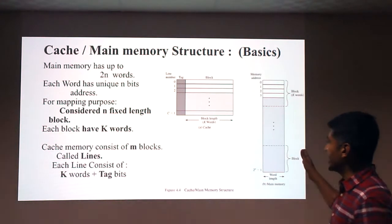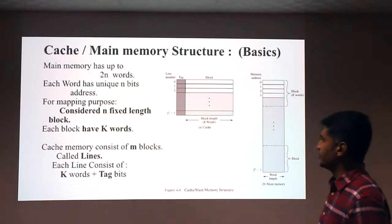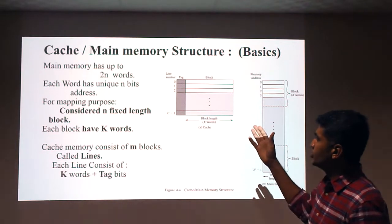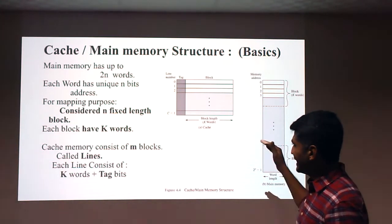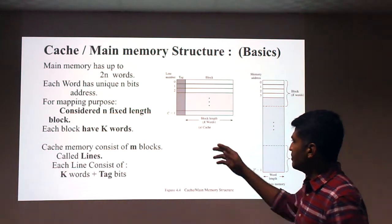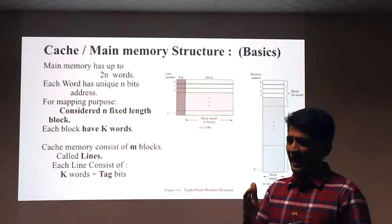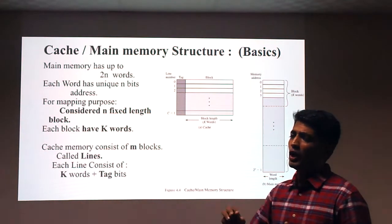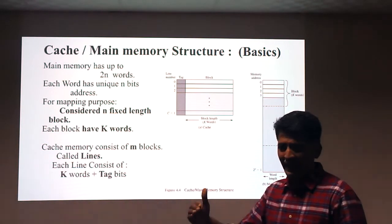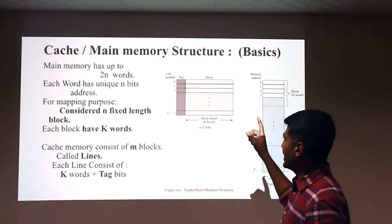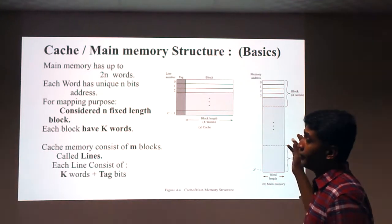The next slide shows how cache memory and main memory are divided and mapped. Cache memory is divided into a number of lines, while main memory is divided into a number of blocks. For example, mapping a 64 KB cache memory with a 32 MB primary memory requires dividing the cache into lines and the main memory into blocks of words.